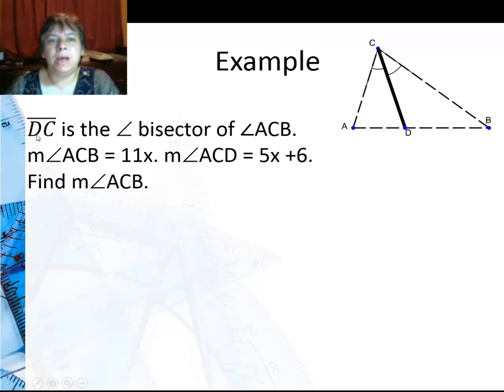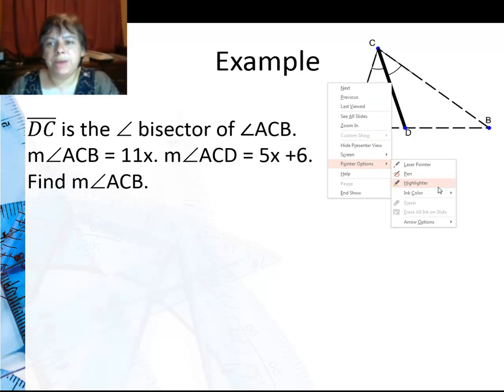In this example, DC is the angle bisector of angle ACB. We know that angle ACB is 11x, and the measure of angle ACD is 5x plus 6.